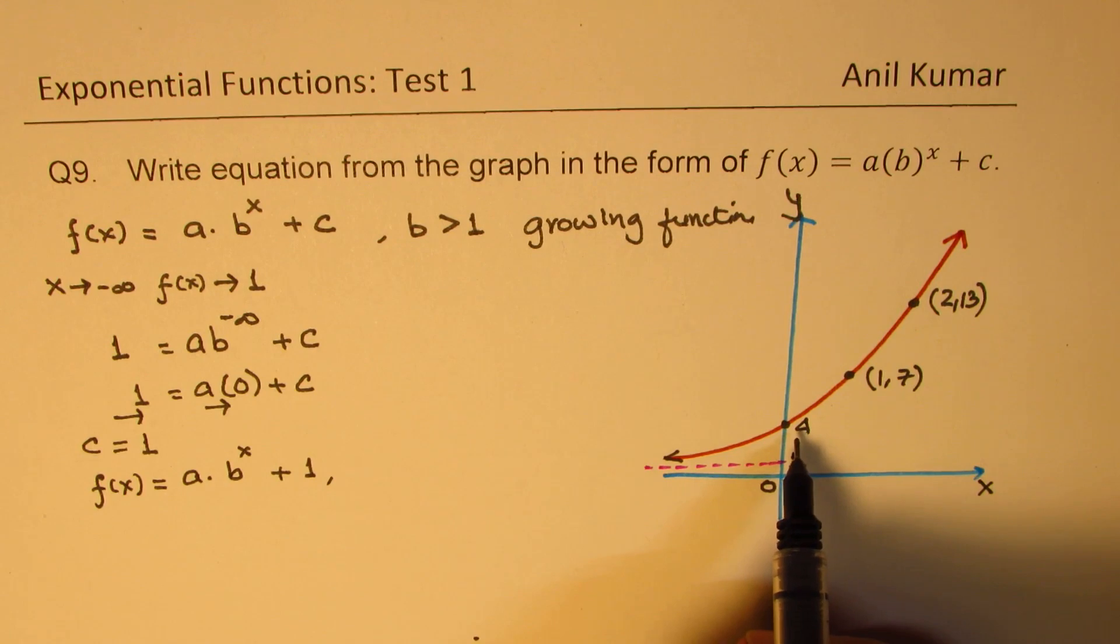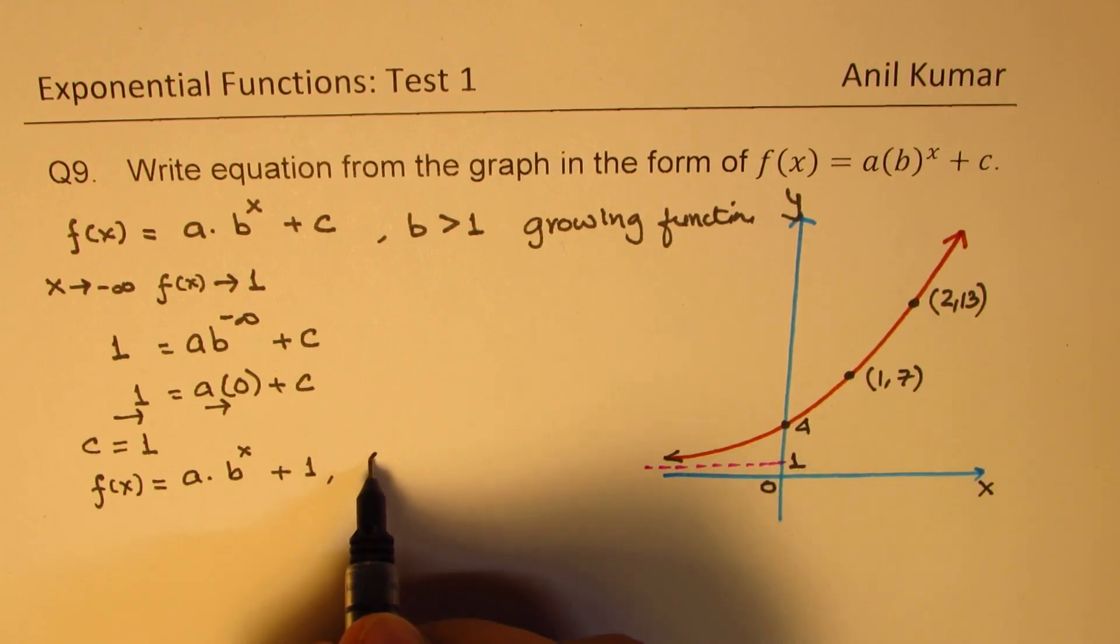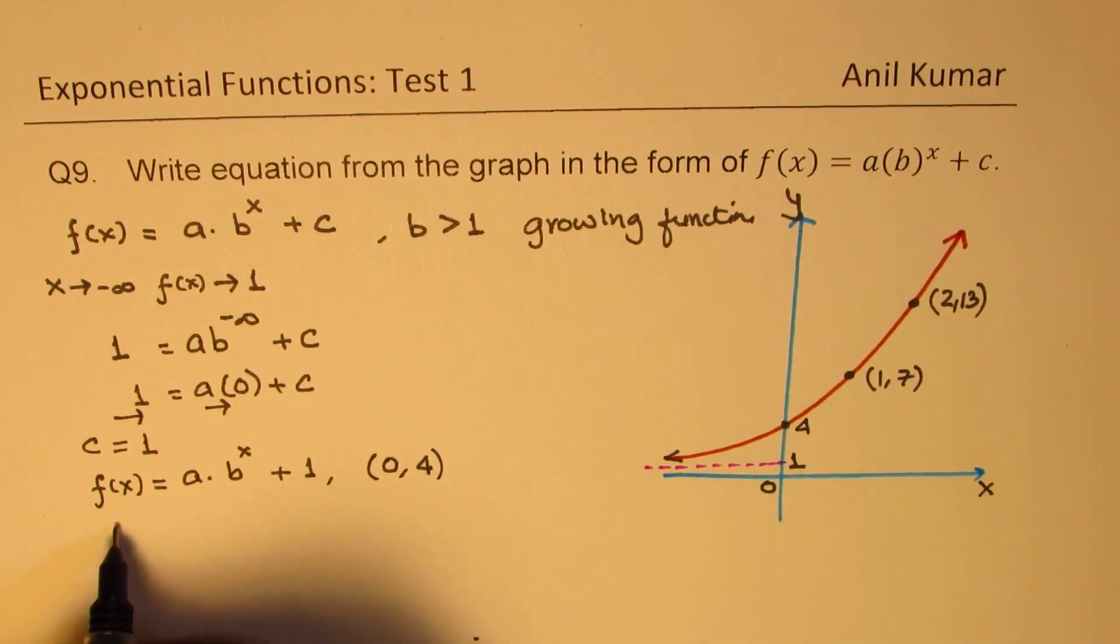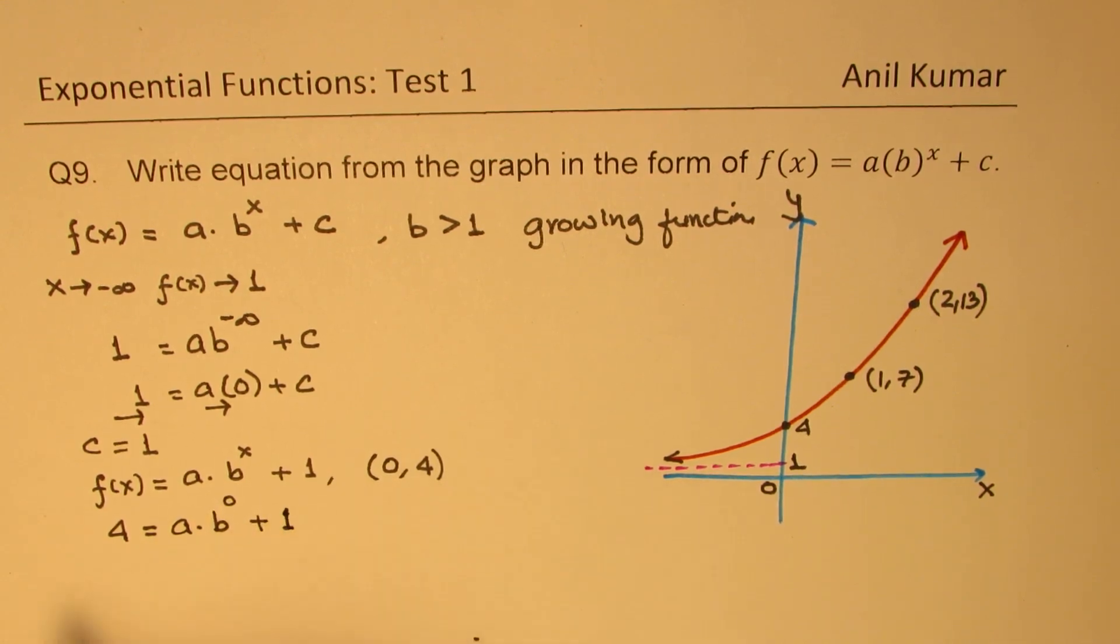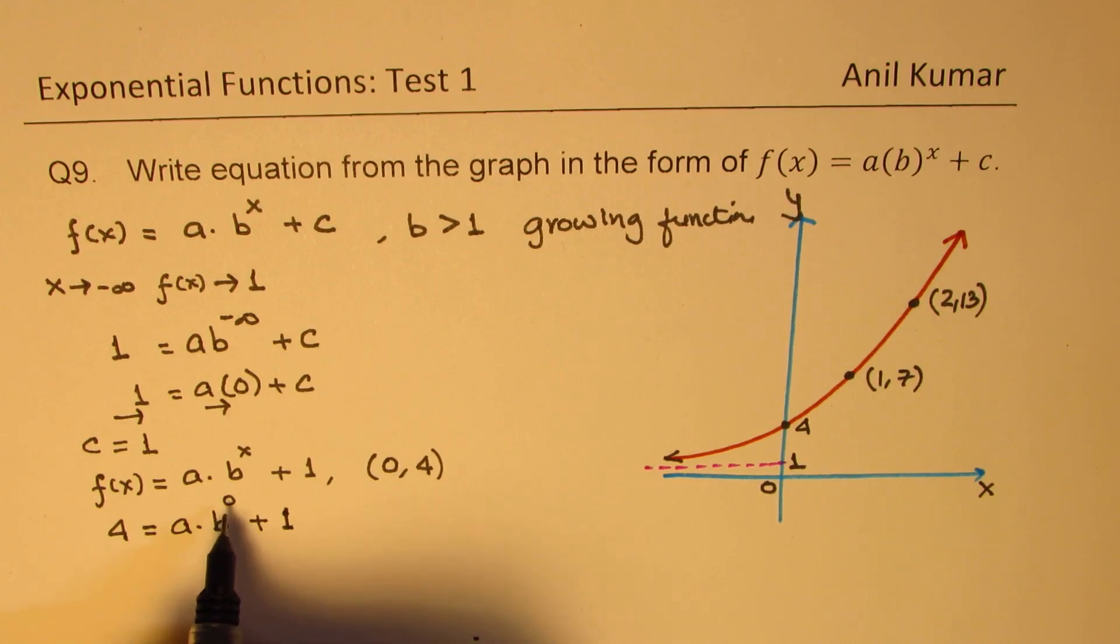Now let's use this point, which is the y-intercept. And the point here is x value is 0, y value is 4. So substituting 4 here for f(x) and 0 for x, we get a times b to the power of 0 plus 1. So anything to the power of 0 is 1. Therefore, we can write this as 4 equals to a plus 1.